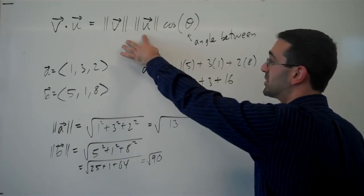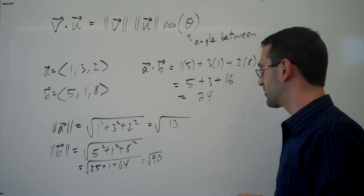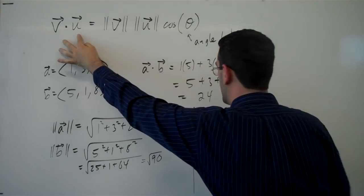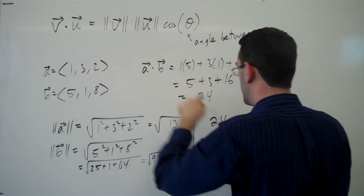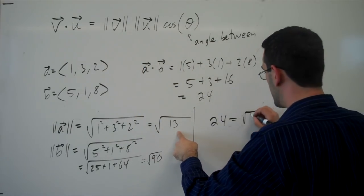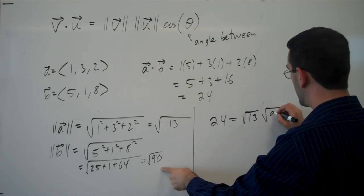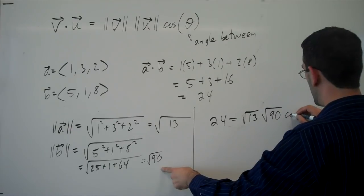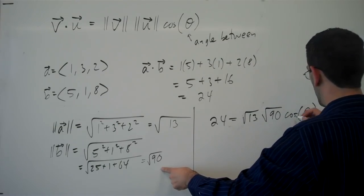And so now using that in my dot product formula here, we know that the dot product of 24 is equal to the magnitude of the first vector times the magnitude of the second vector times cosine of the angle between.